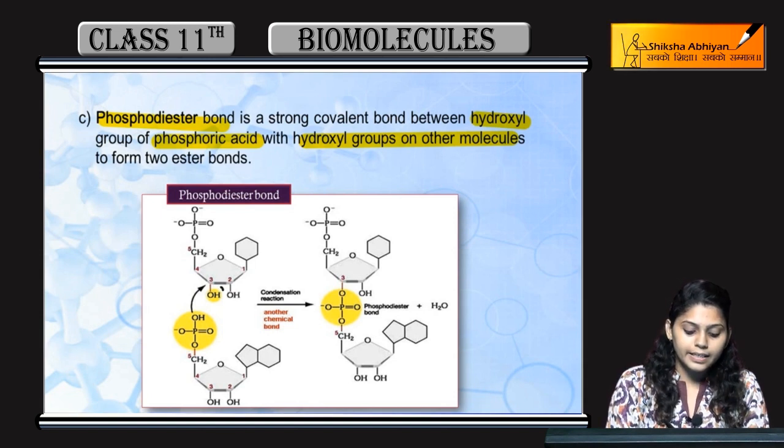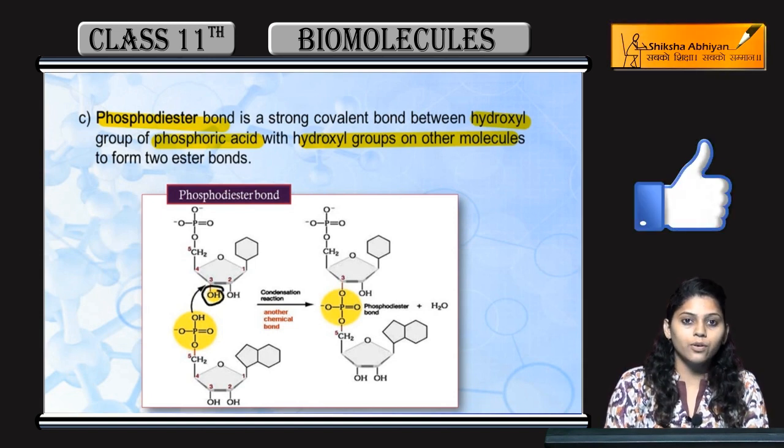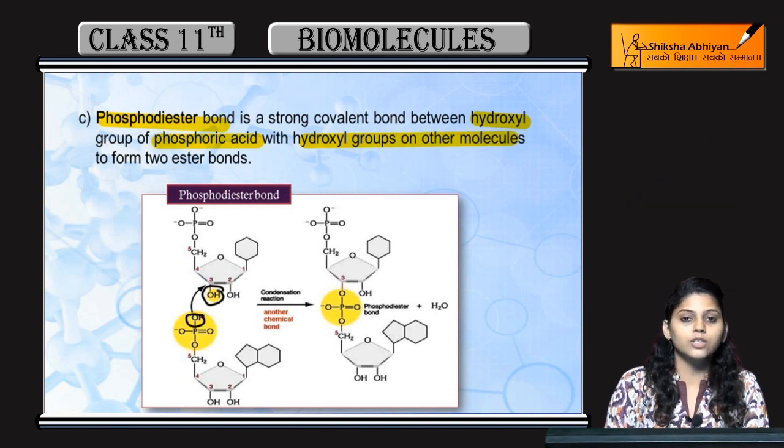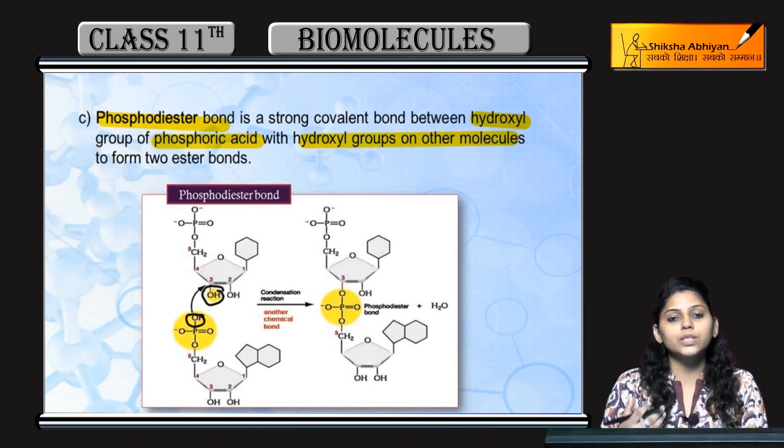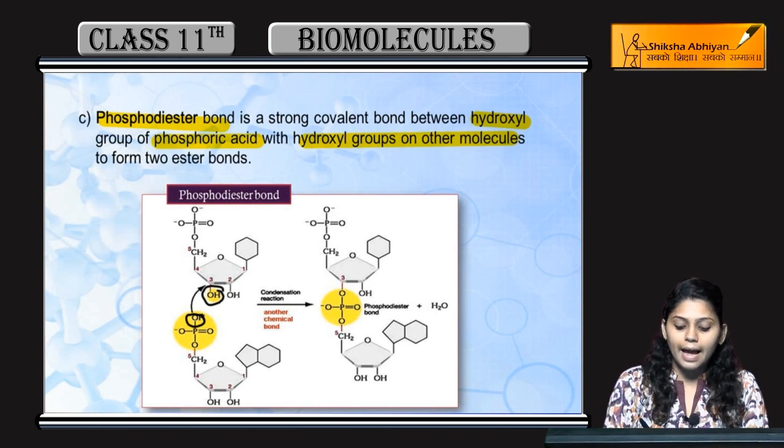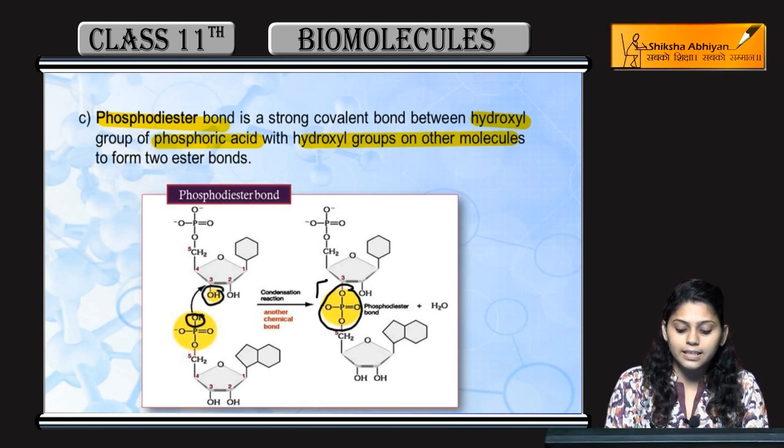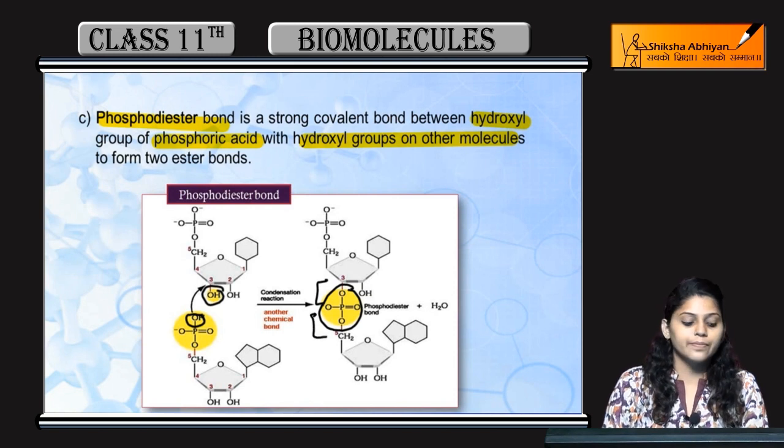यहां आप देखेंगे, ये है first molecule का hydroxyl group और ये phosphoric acid का hydroxyl group। इनकी condensation होगी, water remove होगा and ये phosphodiester bond बनेगा। दो ester bonds बनते हैं, इसलिए diester कहते हैं।